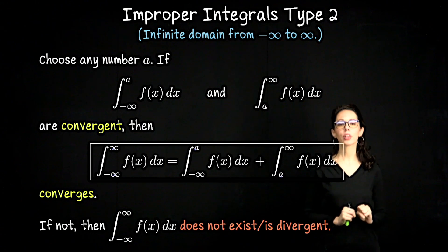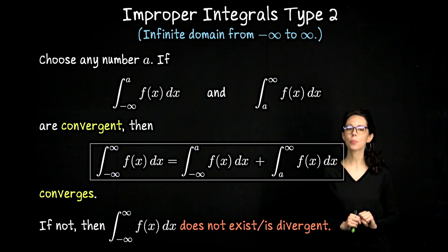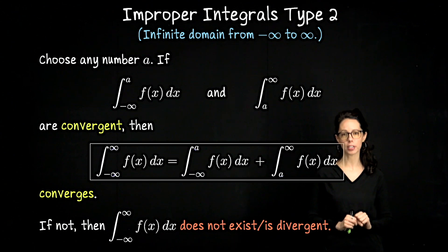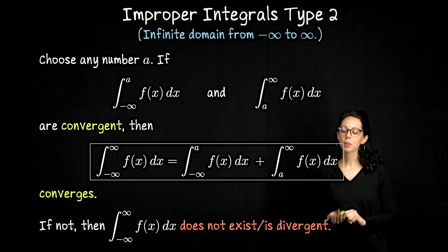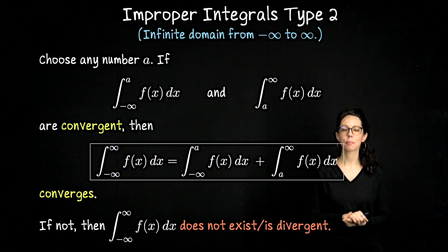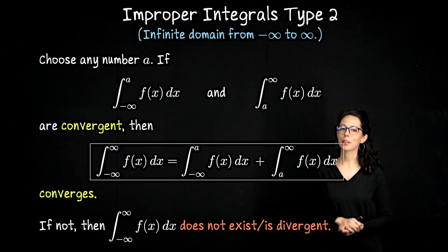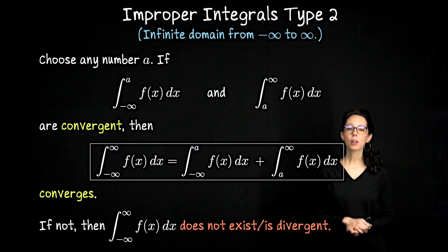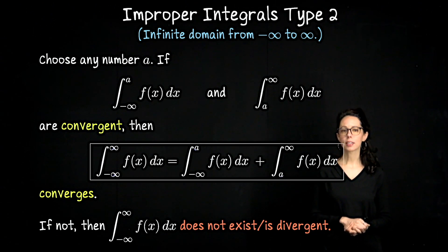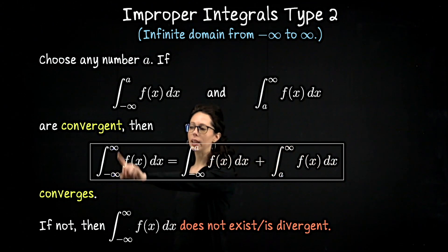This is part two of our look at improper integrals in single variable calculus. If you missed part one, go back and watch that first. I'm calling our three parts type one, two, and three, but that's just my numbering system — not necessarily some standard universal way to talk about improper integrals. What we're going to see in this video is how to integrate a function, or assess whether or not it's integrable, over a domain which looks like negative infinity to infinity.